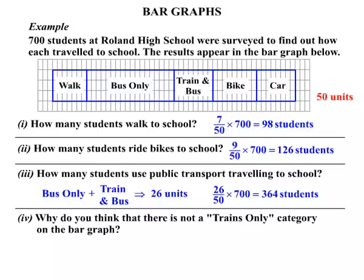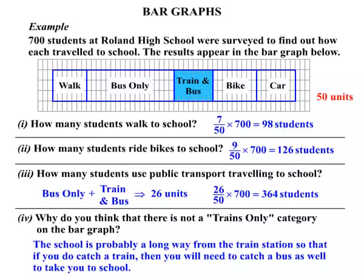Our fourth and final question: why do you think there is not a trains-only category on the bar graph? We have train and bus, but not simply a trains-only option. Sometimes questions are posed that you have to think about — not necessarily mathematical calculations, more so have a think. A possible solution would be that the school is probably a long way from the train station, so if you do catch a train, you will also need to catch a bus to get to school.